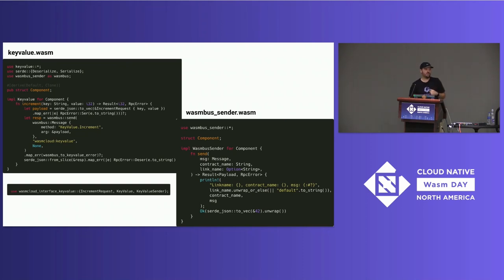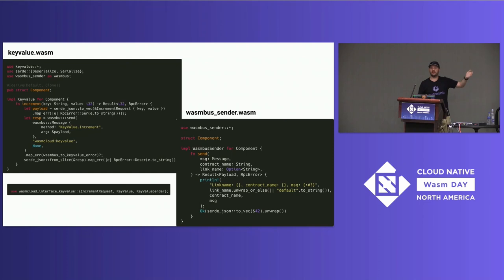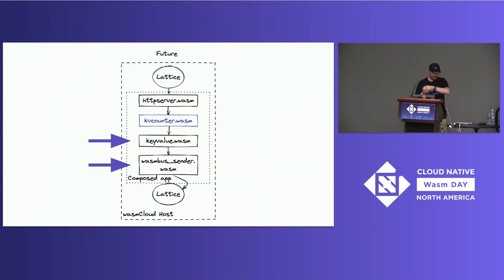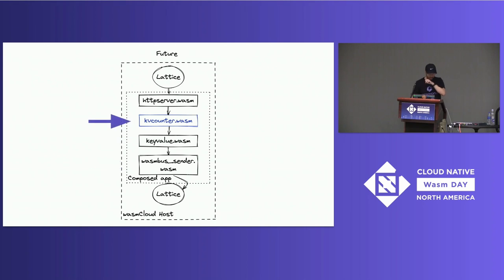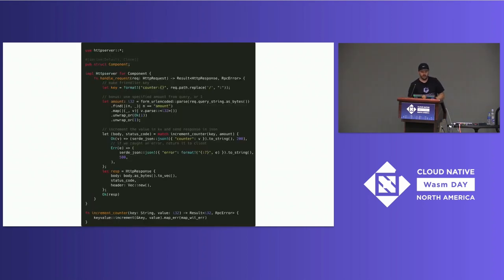This also replaces a lot of our own code — the sender replaces a whole bunch of data copying and serializations we needed to get things into the right format. With a component, we're able to talk directly to the host using typed functions. So what does this all enable? Let's look at the new key-value counter — you'll notice it looks almost identical to the one from the very beginning.